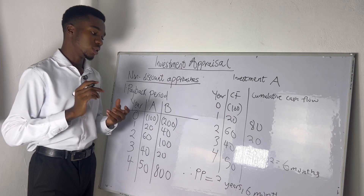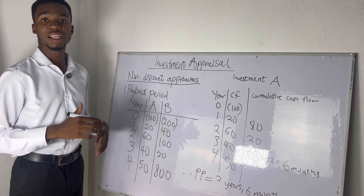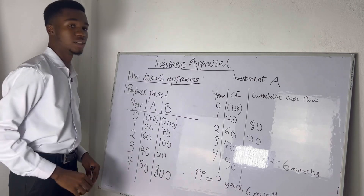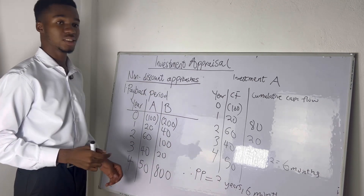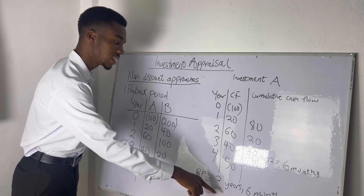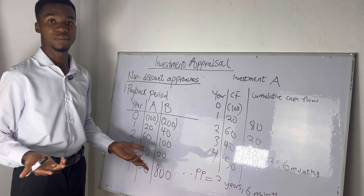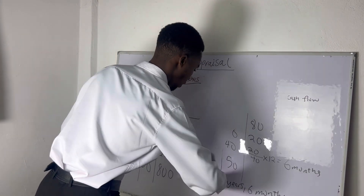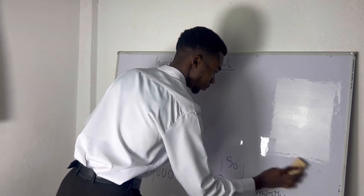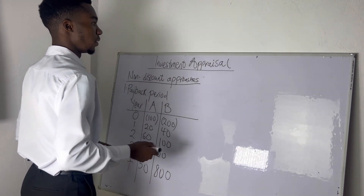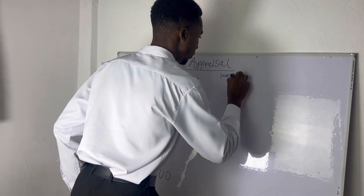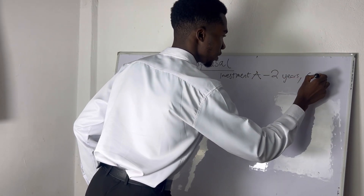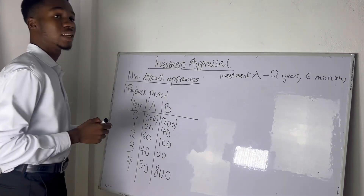Investment A's payback period is 2 years, 6 months. If Investment B takes longer, we should choose Investment A; if it's shorter, we choose B. Now let's solve for Investment B. The cash flows are: year 0 invested 200 CDs, year 1 received 40 CDs, year 2 received 100 CDs, year 3 received 20 CDs, year 4 received 800 CDs.